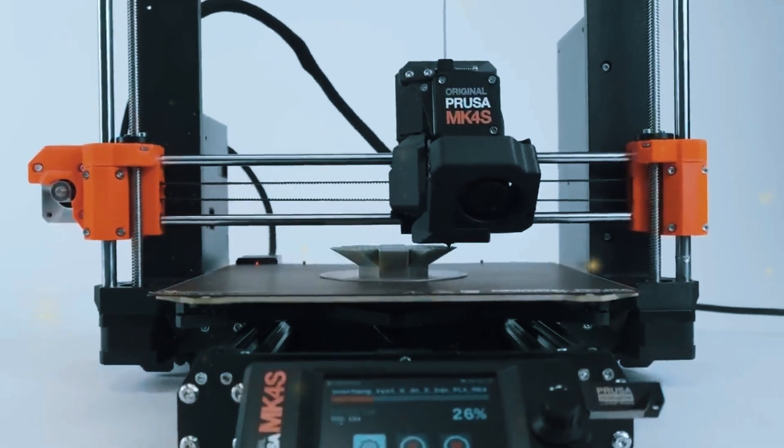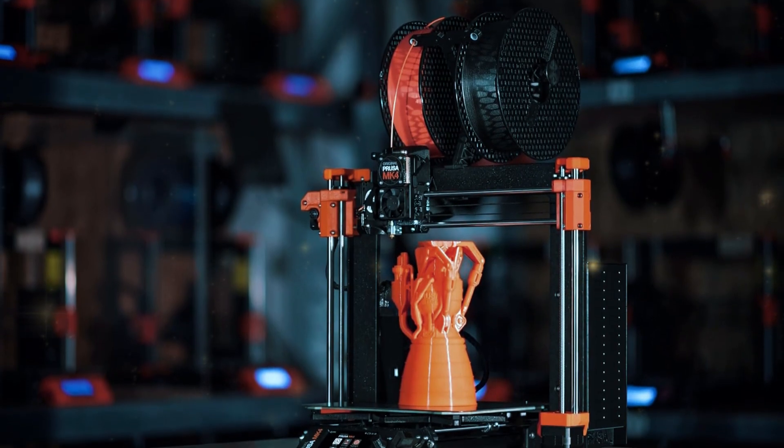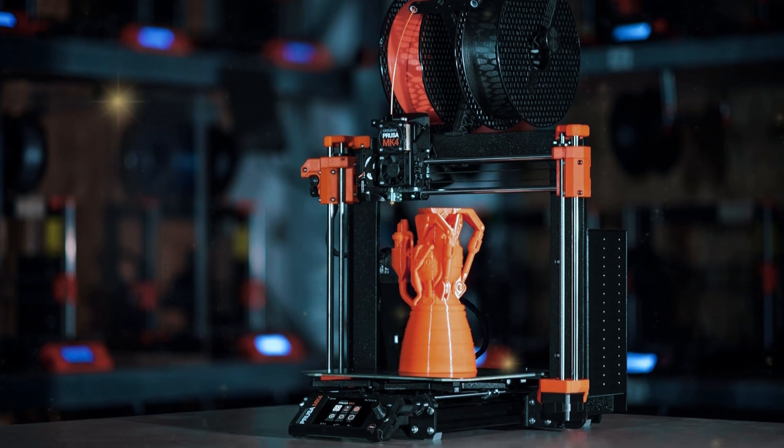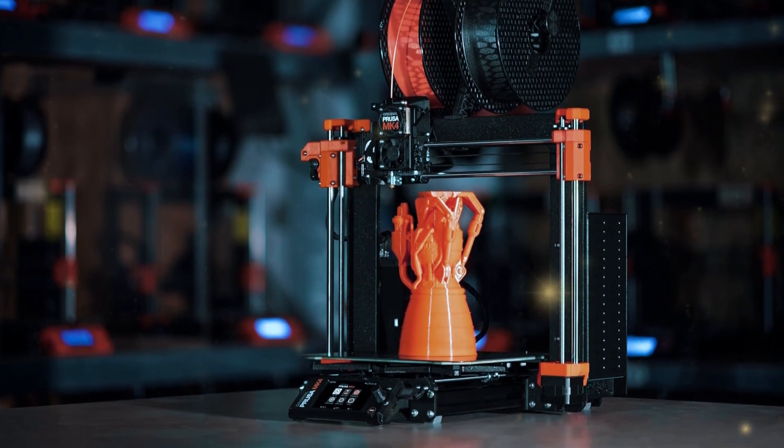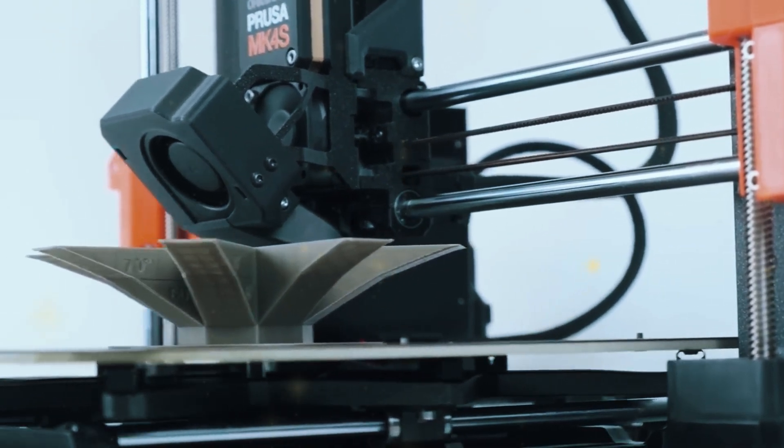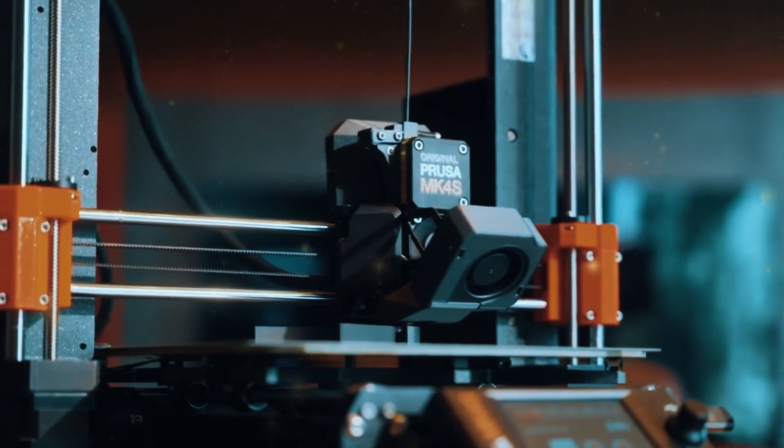The versatility of the MK4S is another key feature. This printer can handle a wide range of filaments from standard materials like PLA and PETG to more advanced filaments like carbon-filled composites and flexible materials. Thanks to its direct drive extruder, even printing with flexible materials is smooth and hassle-free, opening up more possibilities for your projects.